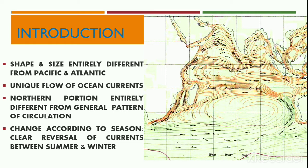The ocean is locked by India in the north, Australia in the east, and Africa to the west. Thus the shape and size of the Indian Ocean is entirely different from those of the Pacific and Atlantic oceans, and hence the Indian Ocean has unique features regarding the flow of its ocean currents. The currents of the northern portion of the Indian Ocean are entirely different from the general circulation pattern of oceans.